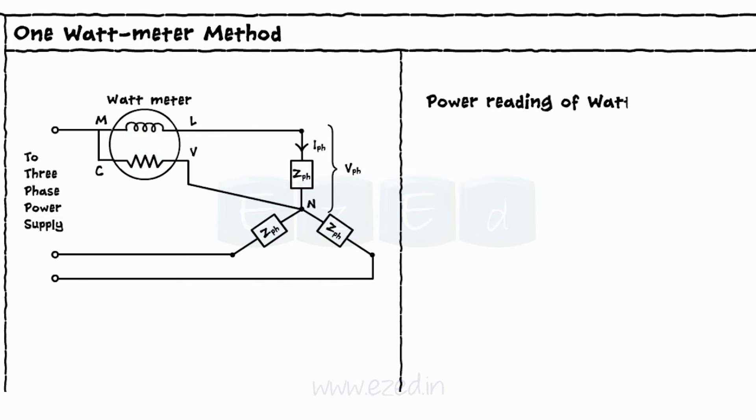Thus, the power read by the wattmeter becomes W equals VPH IPH cos phi.